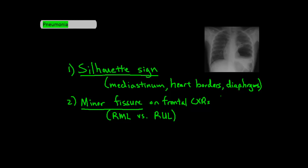The minor fissure will help you tell between right middle lobe and right upper lobe pneumonias. In this video we'll also mention air bronchograms, which is something you can see that might indicate pneumonia, as well as the spine sign for looking for pneumonia on a lateral chest x-ray. It will be helpful to take a look at our previous videos about lung fields and the silhouette sign. Now let's get started.